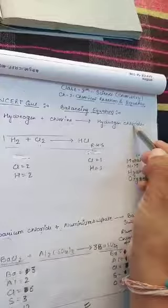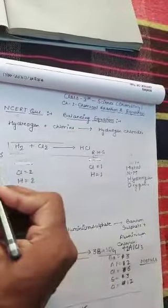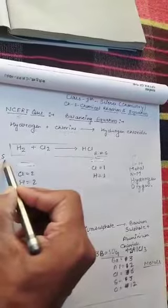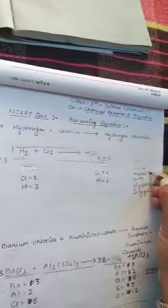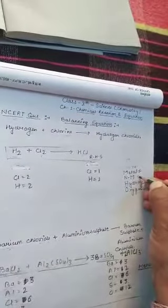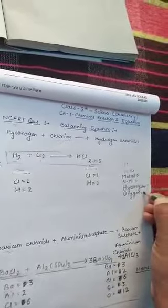First of all we will write the atom number on the left hand side. The order is: first write the number of metal, then the number of non-metal except hydrogen and oxygen, then hydrogen number, and at the last we will write the number of oxygen. First we will check if there is any metal in this equation. There is no metal.